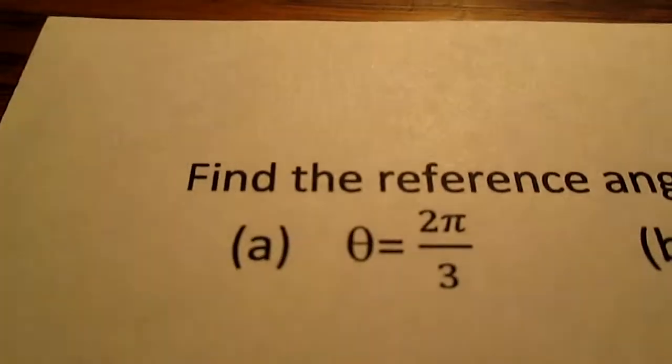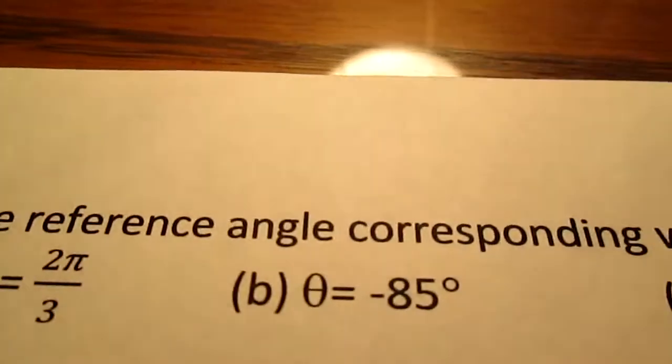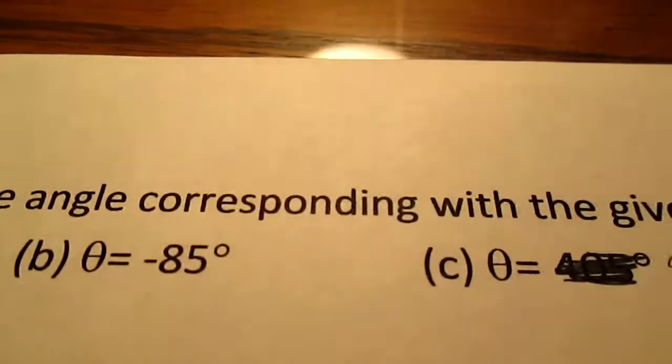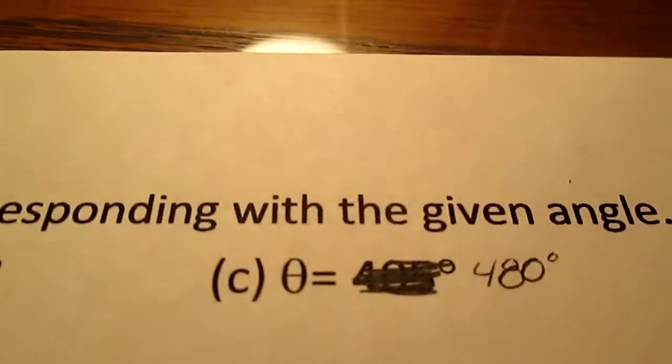Find the reference angle corresponding with the given angles. We actually have three to do. We have θ equals 2π over 3, θ equals negative 85 degrees, and θ equals 480 degrees.